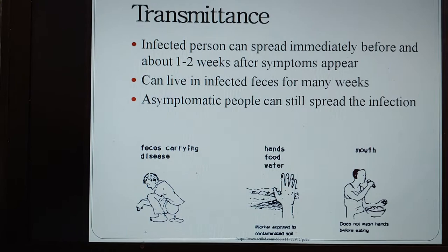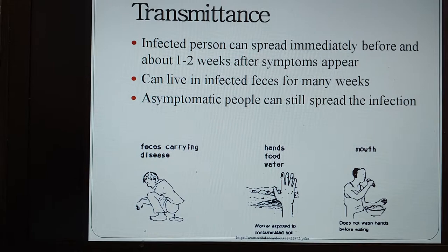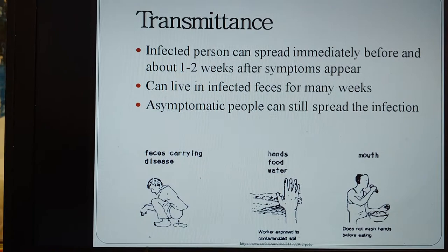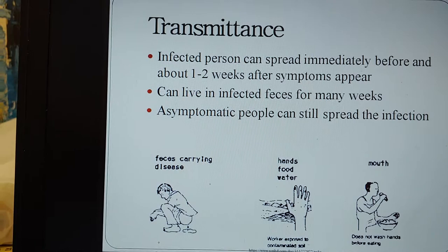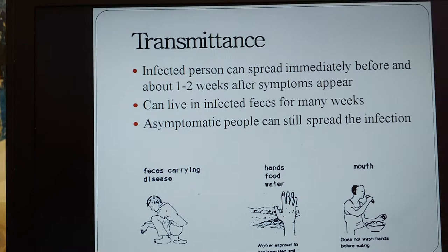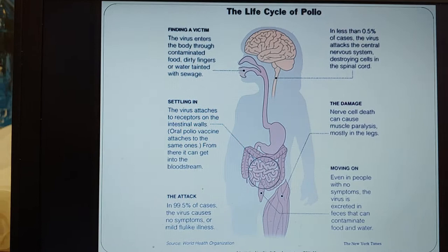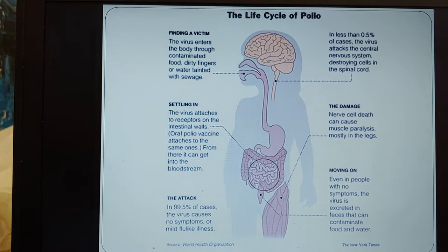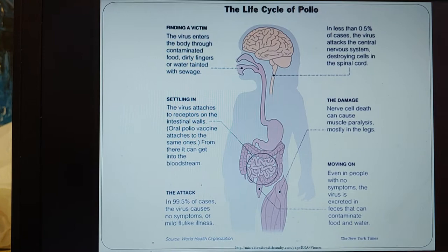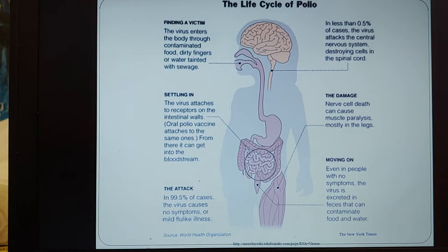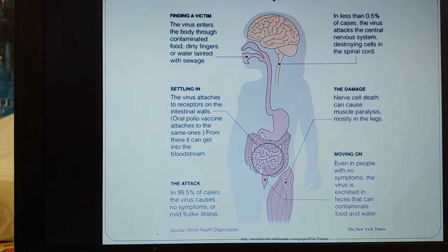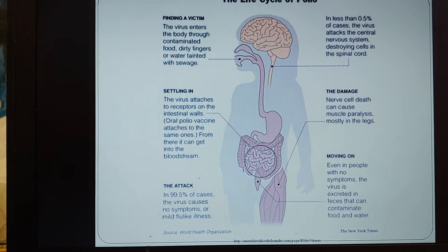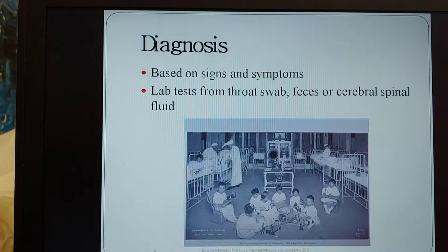Here is a diagram showing how a person with infected feces who doesn't properly wash their hands can touch food, water, or another object, which then exposes a different person who may also not have washed their hands — giving them the possibility of becoming infected. And here is the life cycle of polio: it enters the body through contaminated food, dirty fingers, or water, attaches to receptors on the intestinal wall, and either causes mild flu-like symptoms or attacks the central nervous system, destroying cells in the spinal cord, causing cell death and possibly muscle paralysis. It then moves on through the feces, which contaminate food and water, continuing the cycle.